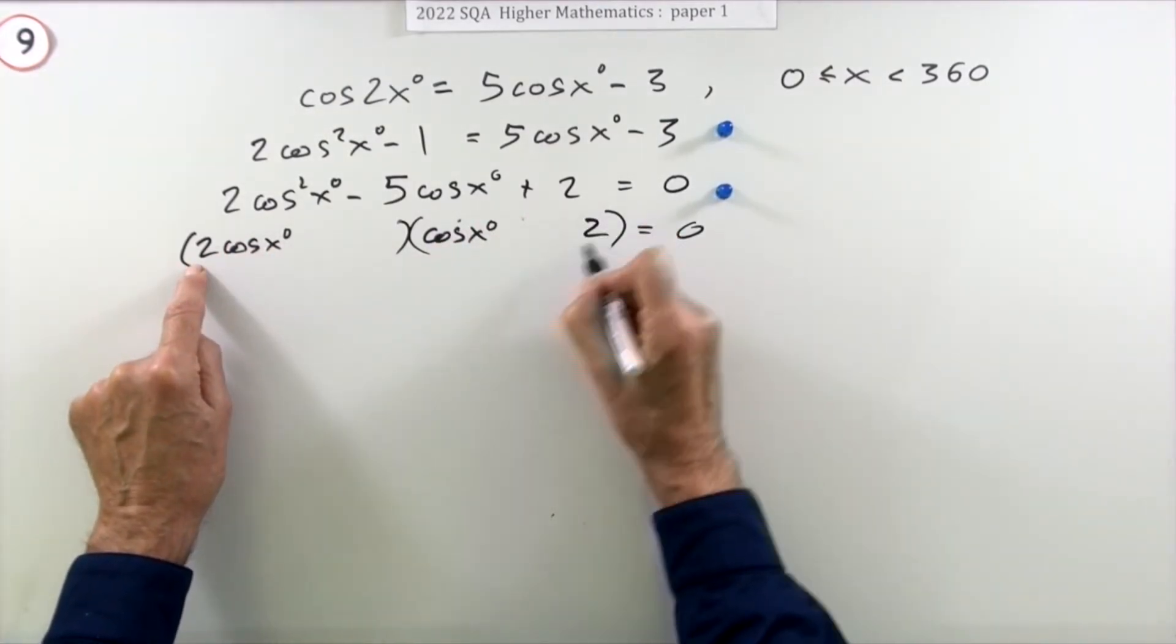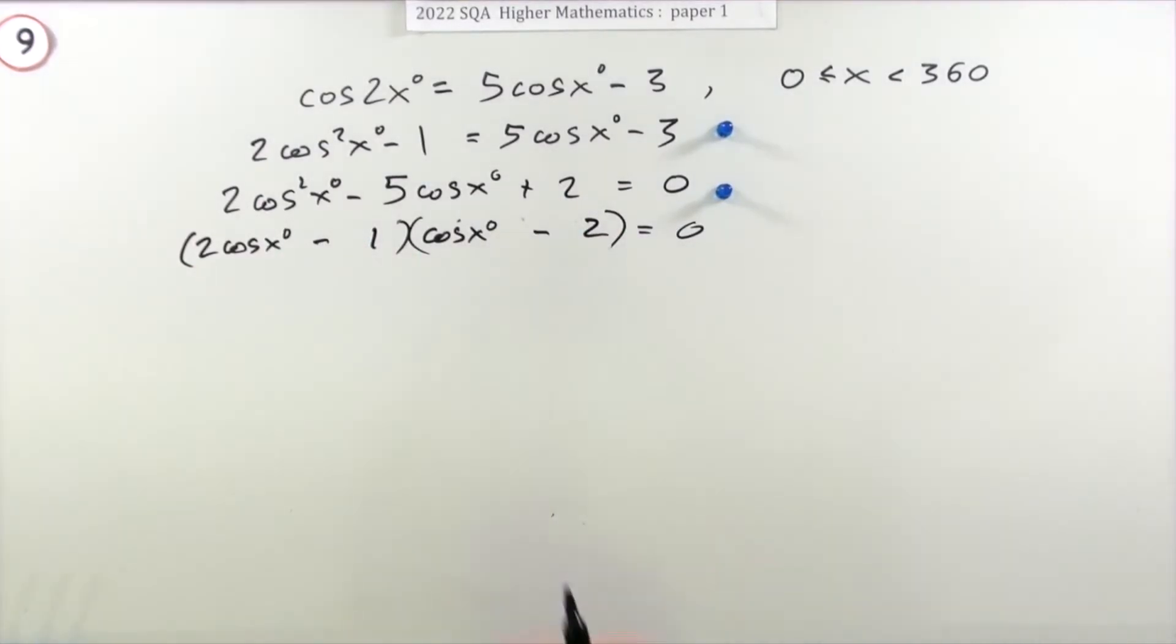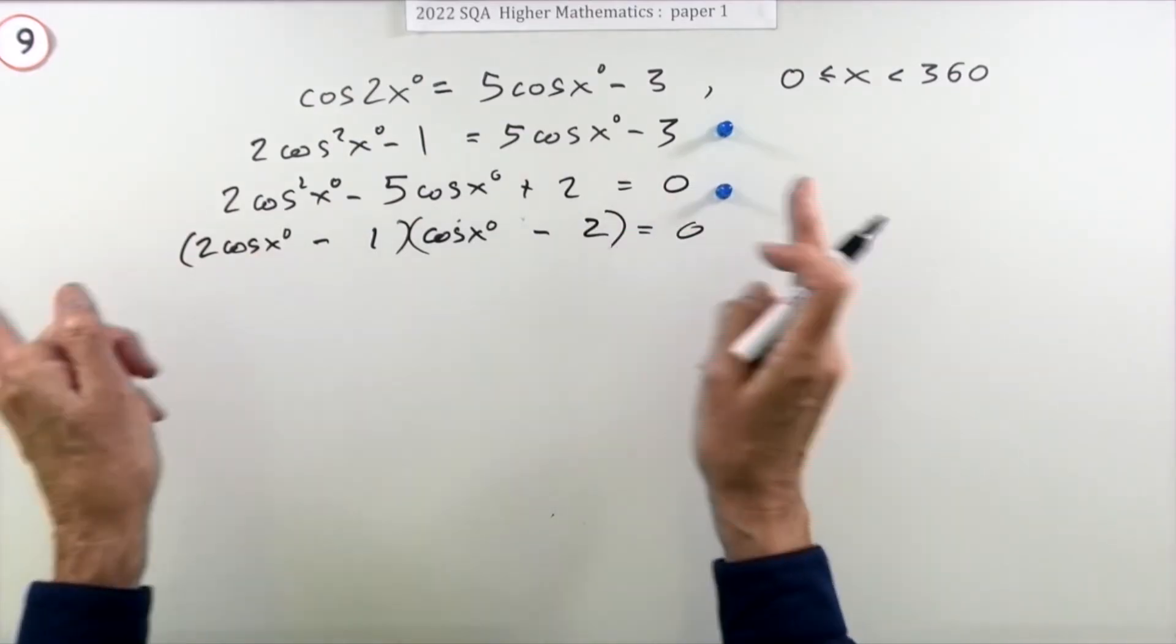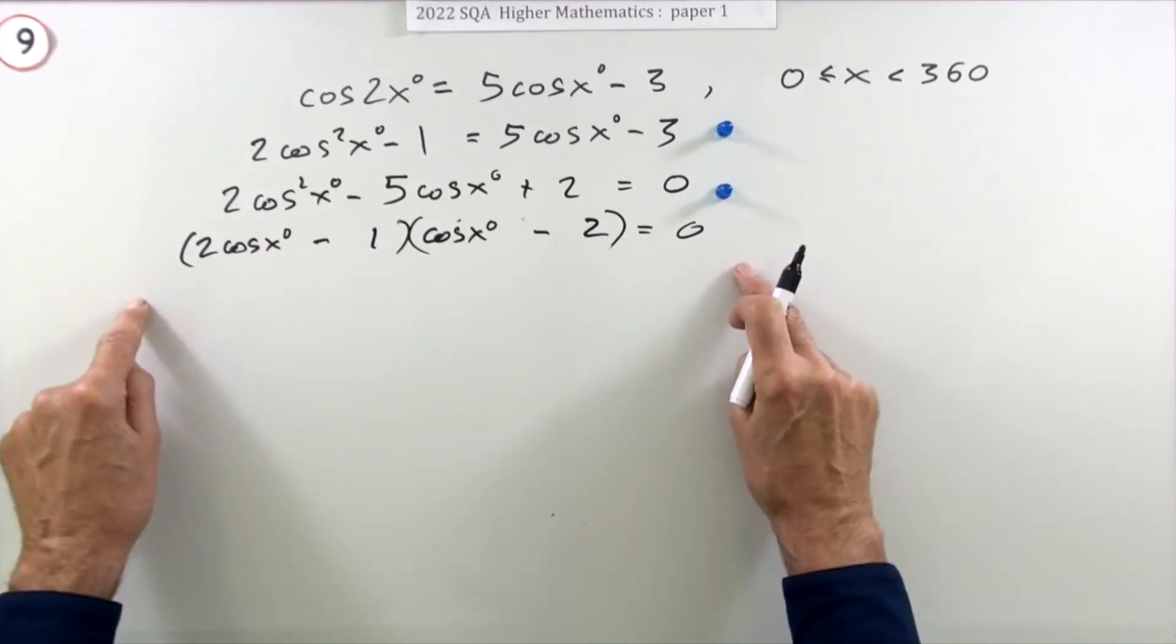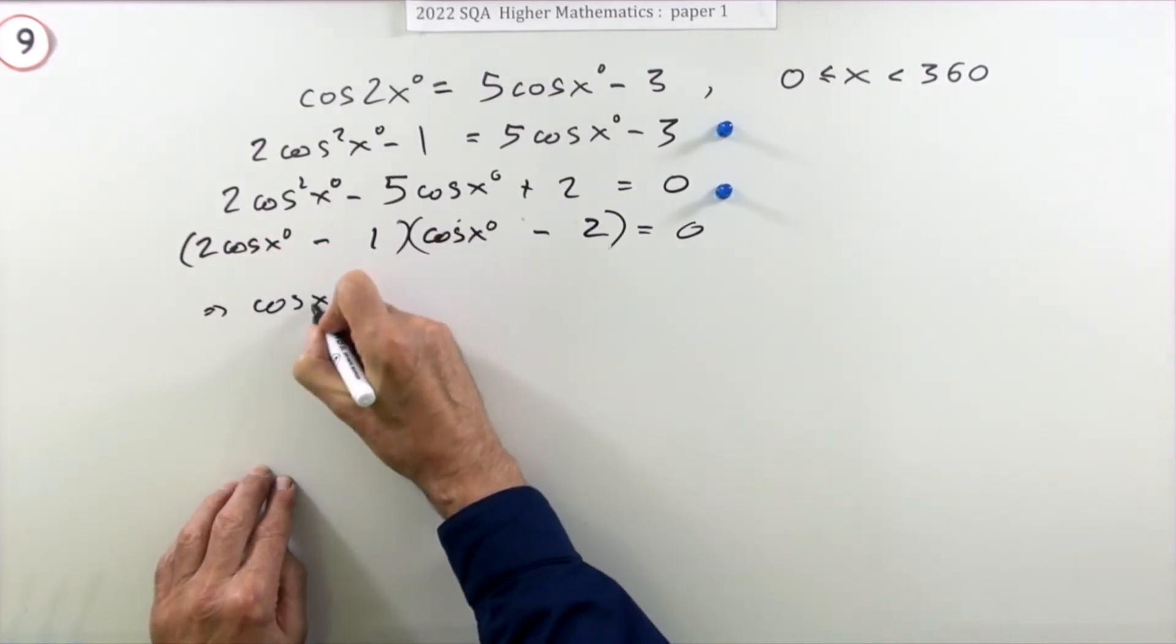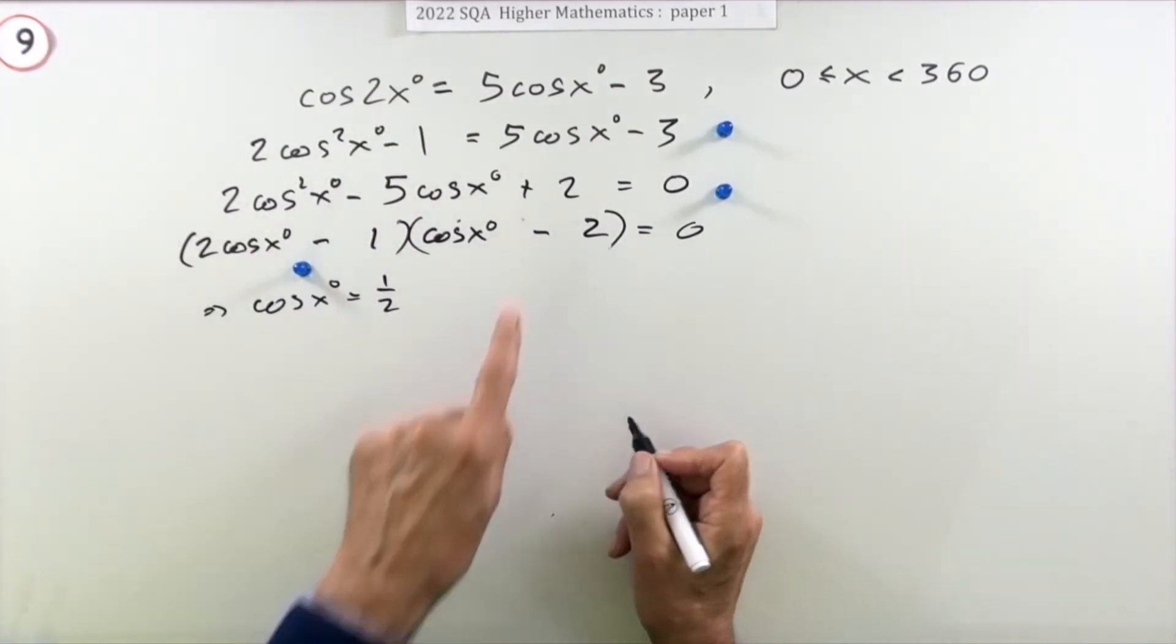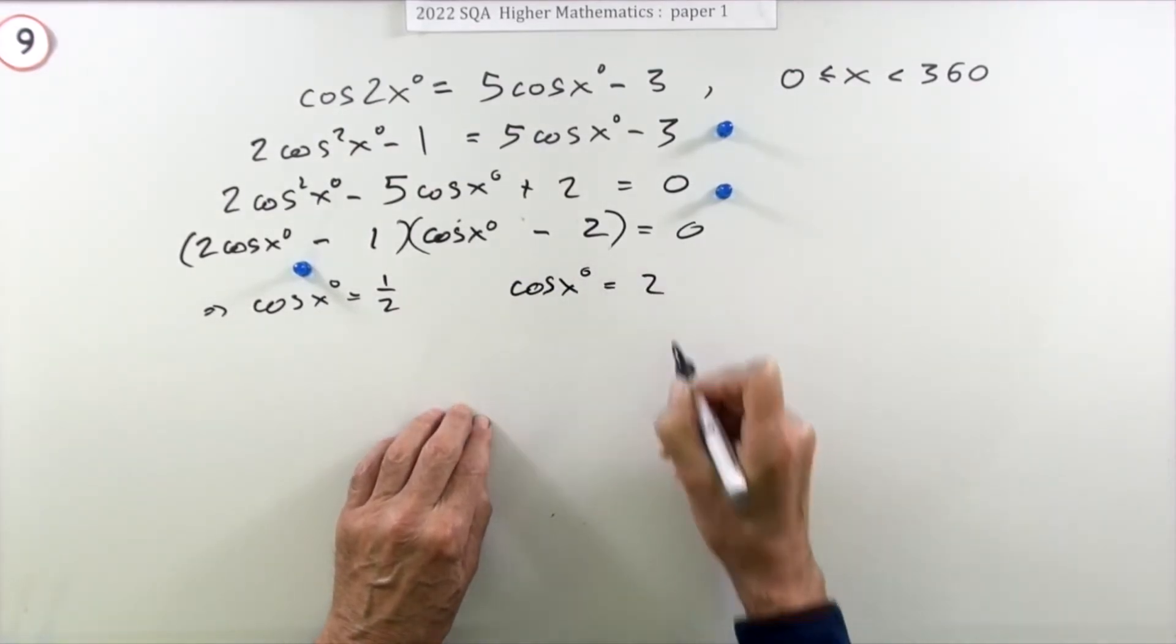So (2cos x - 1)(cos x - 2) = 0. That doesn't quite get the mark yet; you get the mark once you start solving it. The first mark is do this and get one of the answers. So if that bracket comes to zero, cos x would have to be positive a half. That gets a mark.